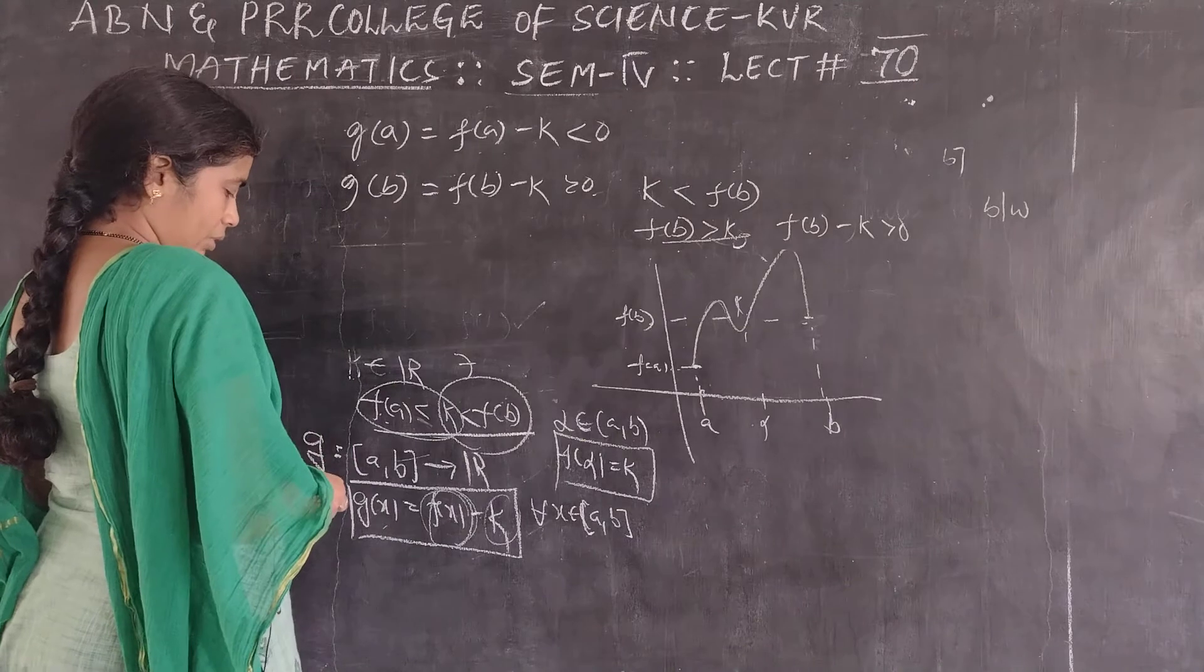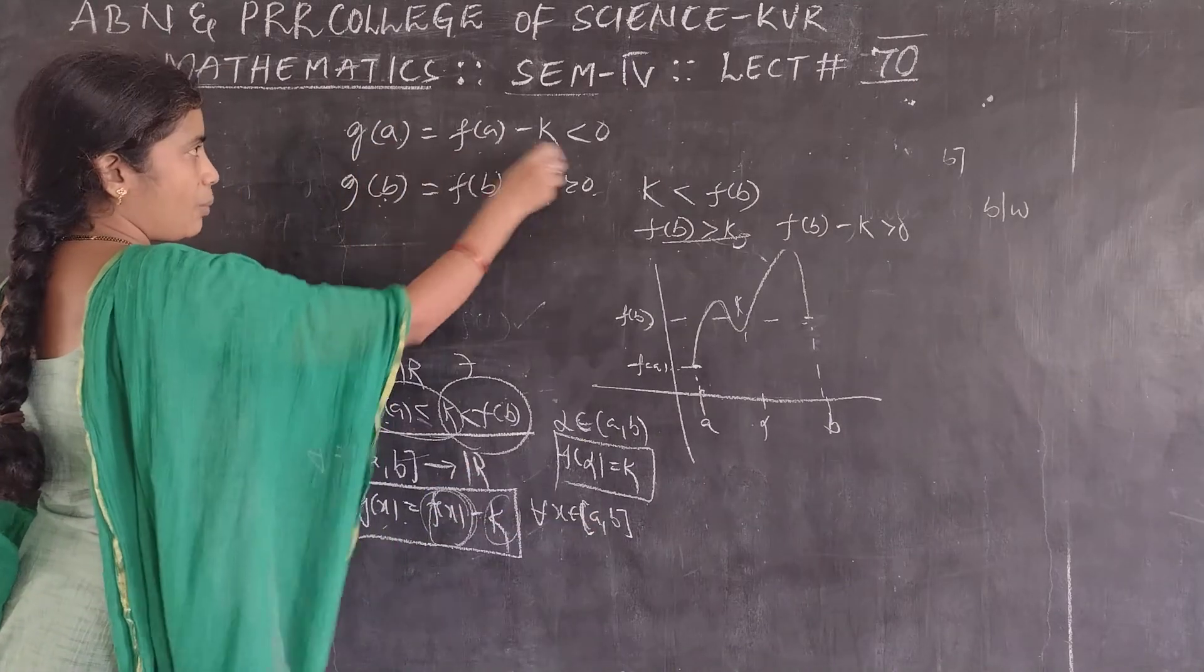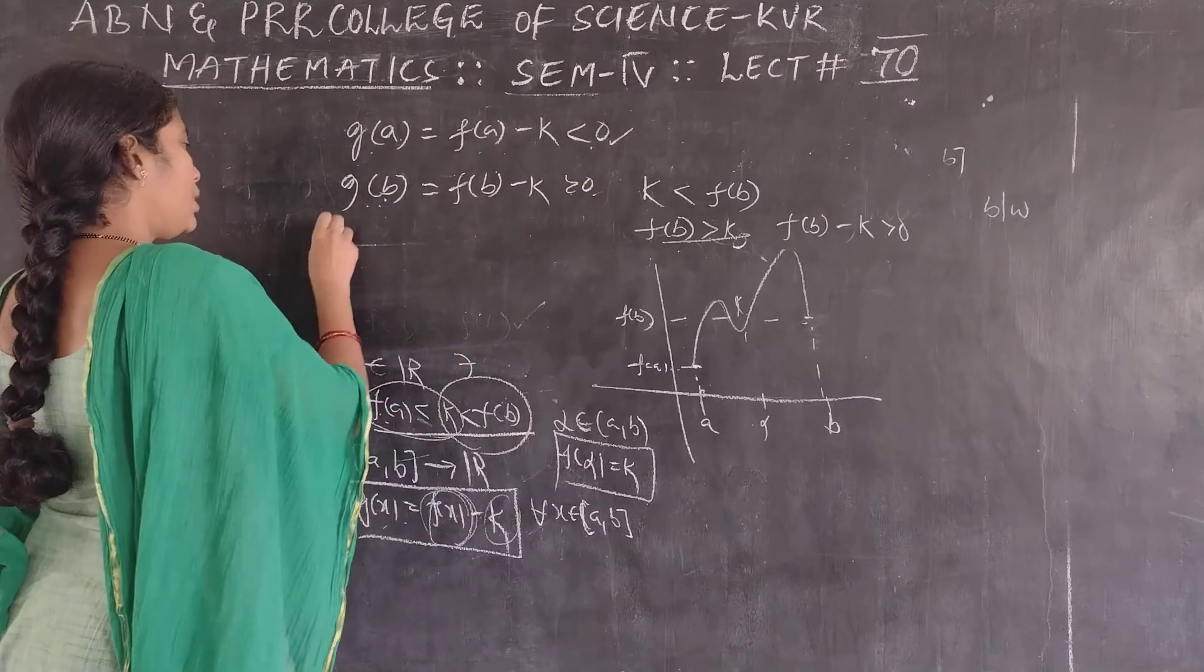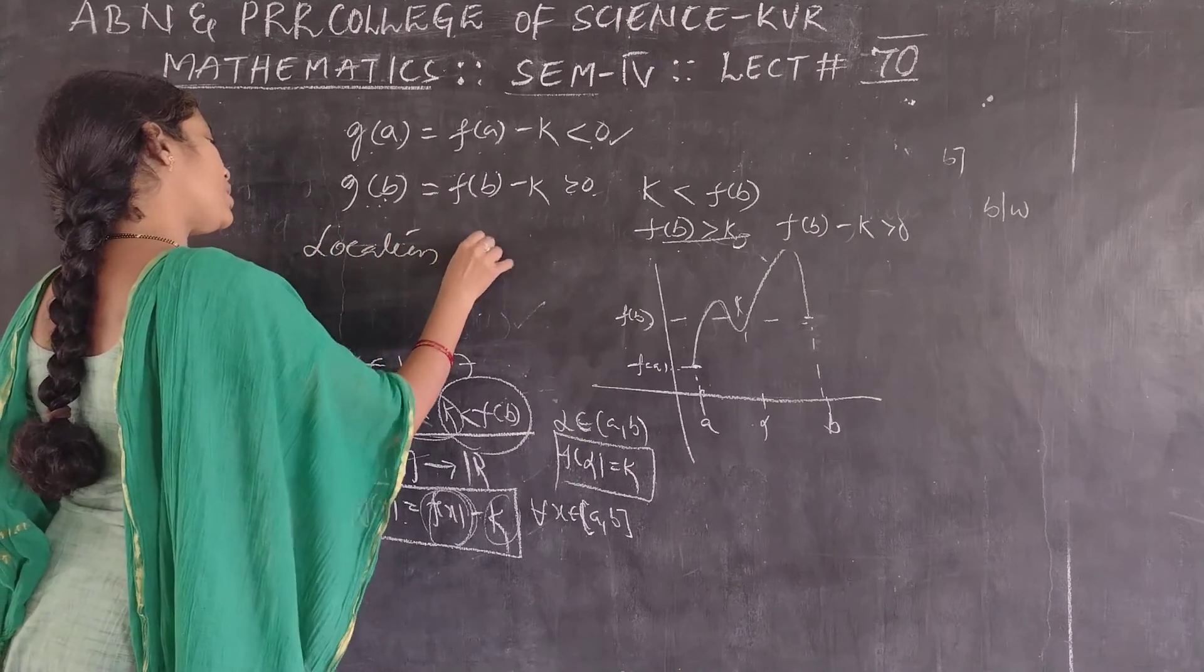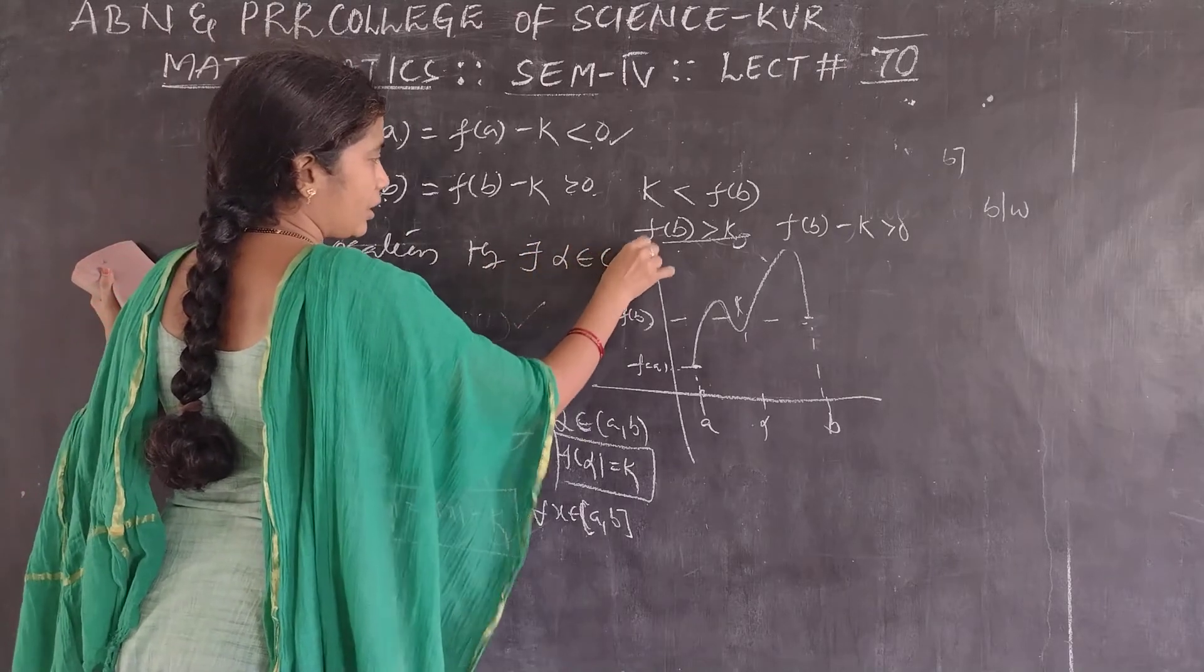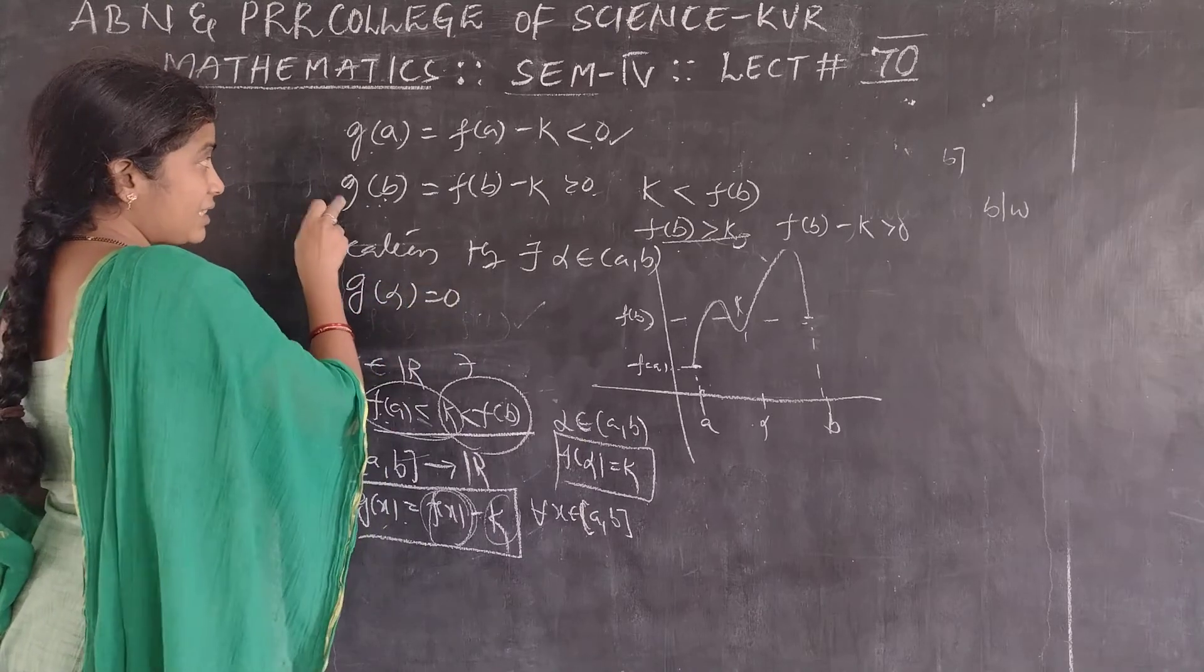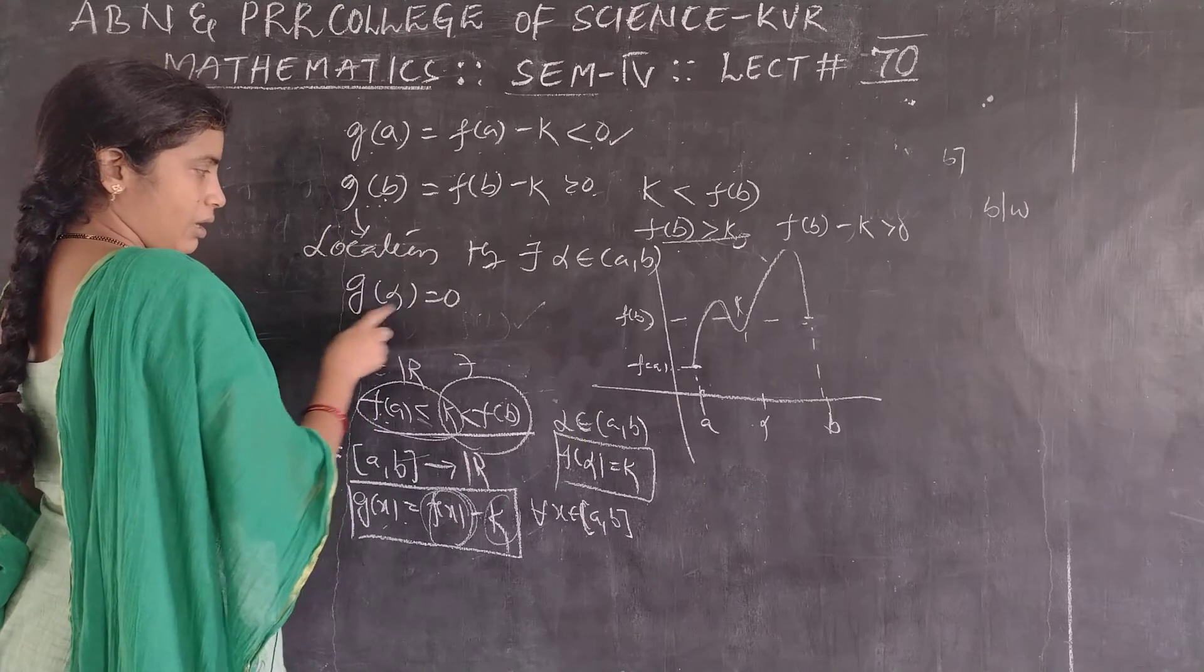Now observe that our new function is continuous on closed AB, and at the endpoints it has opposite signs. G of a is negative, g of b is positive. By Bolzano's location of roots theorem, there exists some alpha in between a and b such that g at alpha will be 0.